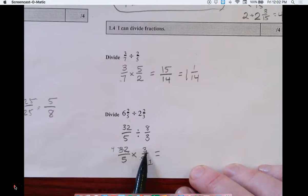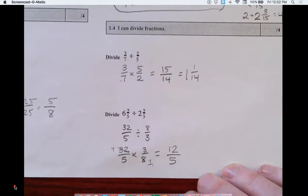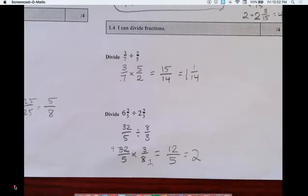So this now becomes four times three, five times one. Five goes into twelve two times, with two left over.